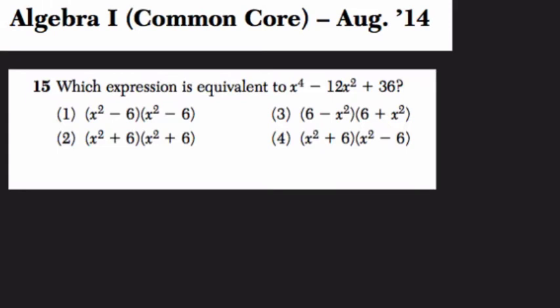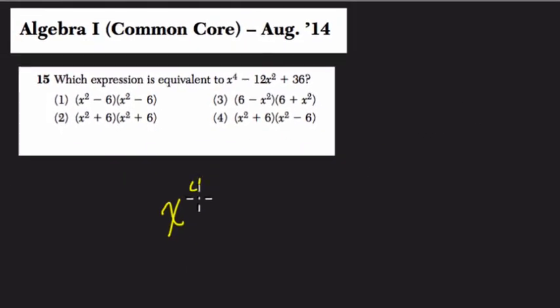In this problem they say which expression is equivalent to x to the 4th, and I like to write these problems out as I read them. x to the 4th minus 12x squared plus 36. So they gave us four choices, and we could compare these in different ways.